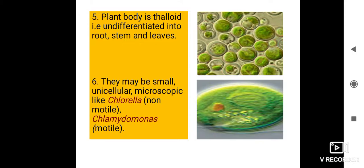They may be small and unicellular, meaning single-celled, and also microscopic — meaning to watch such types of algae we need a microscope. For example, Chlorella, shown in the picture above, is non-motile, meaning it cannot move and is fixed at one position. Chlamydomonas, shown in the second picture, is motile — meaning it can move from one place to another by using flagella.